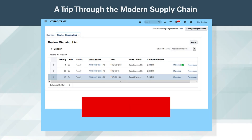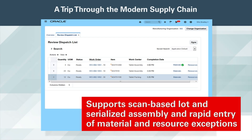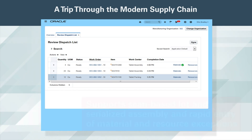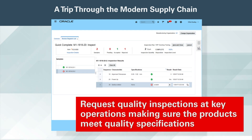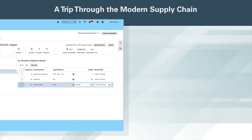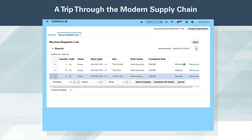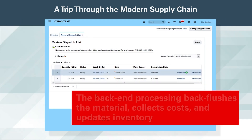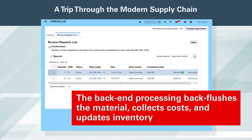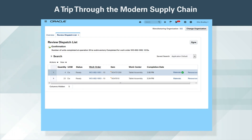Work execution is optimized for routine, fast and easy operation, and supports scan-based lot and serialized assembly and rapid entry of material and resource exceptions. The production operator can request quality inspections at key operations, making sure the products meet quality specifications. In just two clicks, the production operator completes the operation. The back-end processing back-flushes the material, collects costs and updates inventory. With the complete integrated business flow, the finished goods are now available for shipping.